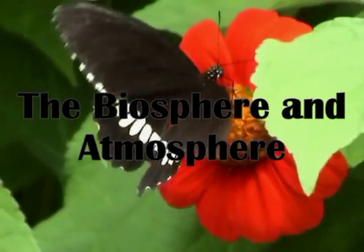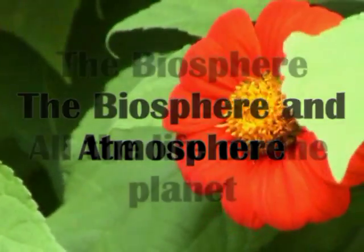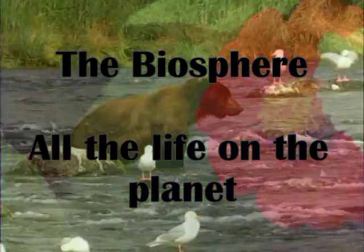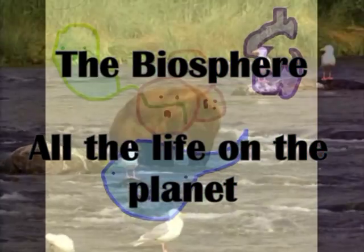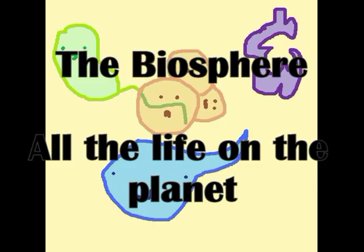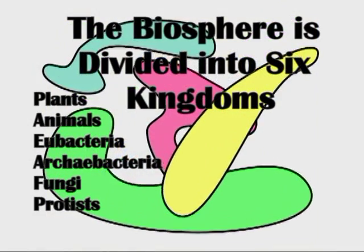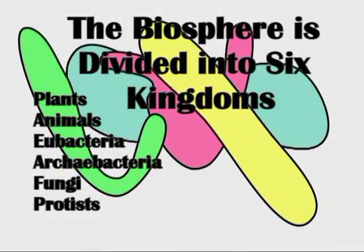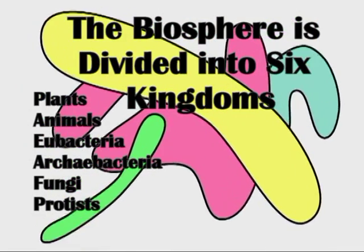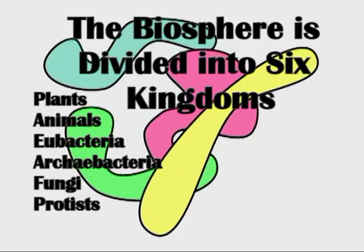The biosphere includes all life — all the plants, animals, and microorganisms. The different sections of the biosphere are grouped into six, what are called, kingdoms: plants, animals, eubacteria, archaebacteria, fungi, and protists.